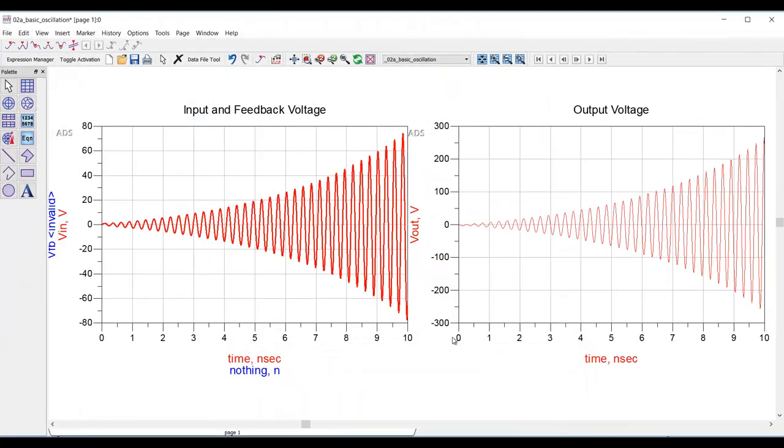Basically, the signal grows exponentially large, so the circuit's oscillating. And if I ran this out more in time, the growing nature of this signal would ultimately cause the transient simulation to fail to converge.